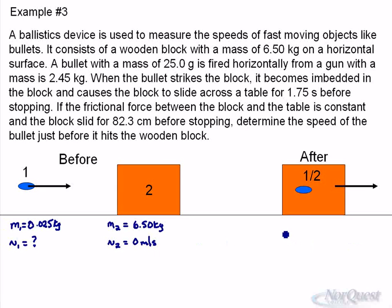What do we know about the after? The mass of object 1 and 2 will equal the total mass of the two objects. It's embedded, so the mass becomes 6.525 kilograms. The velocity of this object after is something we also don't know. Just after the block hits, we don't know what its speed is, but it does travel. That's another unknown.